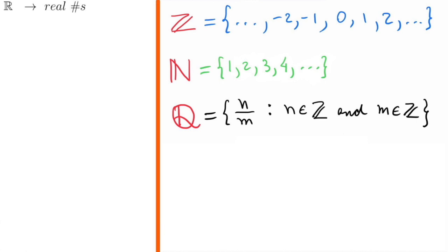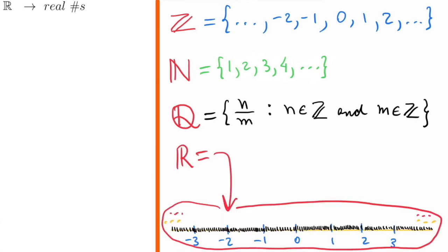The real numbers are represented by this R, and it can be informally defined as all possible numbers in this line.